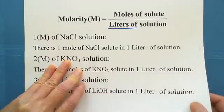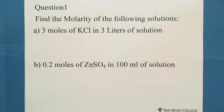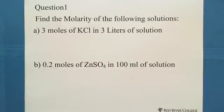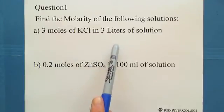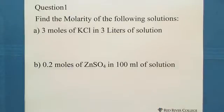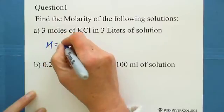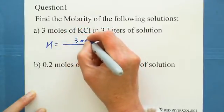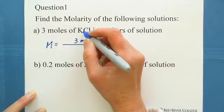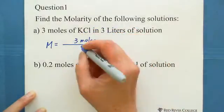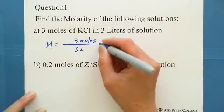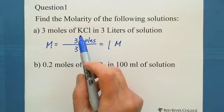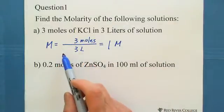Let's try some questions. Question A: find the molarity of the following solution — three moles of potassium chloride in three liters of solution. Following the definition, molarity equals moles of solute divided by liters of solution: three moles divided by three liters equals one. So the concentration is one molarity.